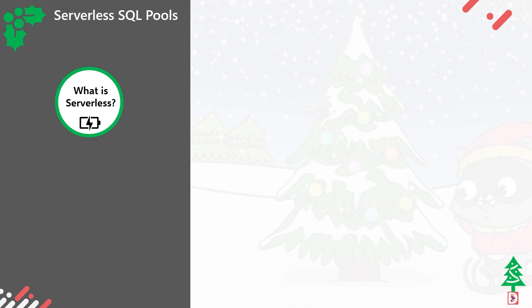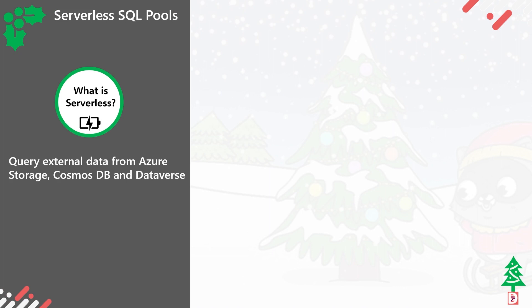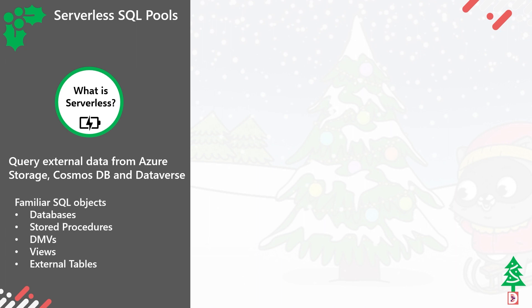What is serverless SQL pools? Essentially, we can connect from serverless SQL pools to data that's stored in external storage — Data Lake Gen1, Gen2, blob storage — but we can also connect to Cosmos DB and data exported from the dataverse. We've got familiar SQL objects: we can create databases, SQL logic encapsulated in stored procedures, system views, views, and external tables. That's how we can cast structure over data that's stored externally.